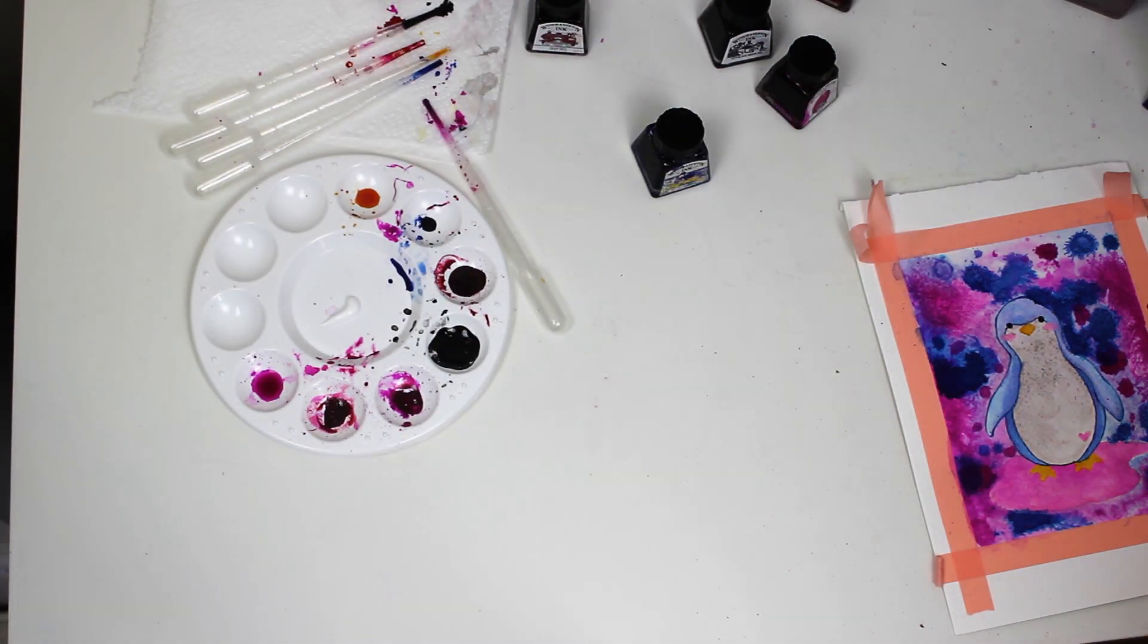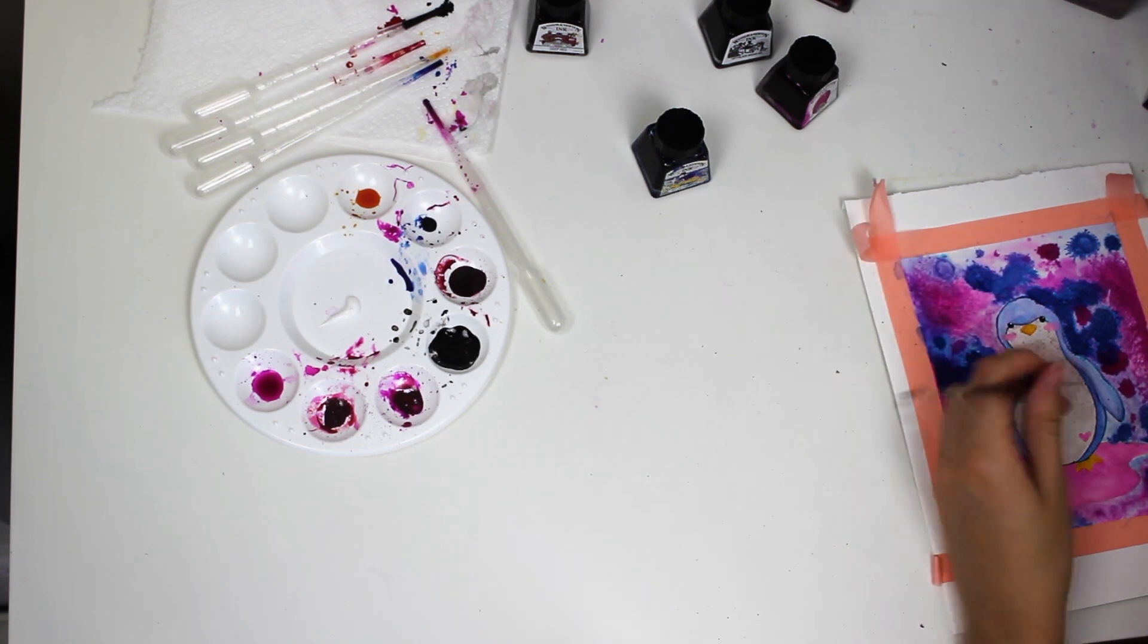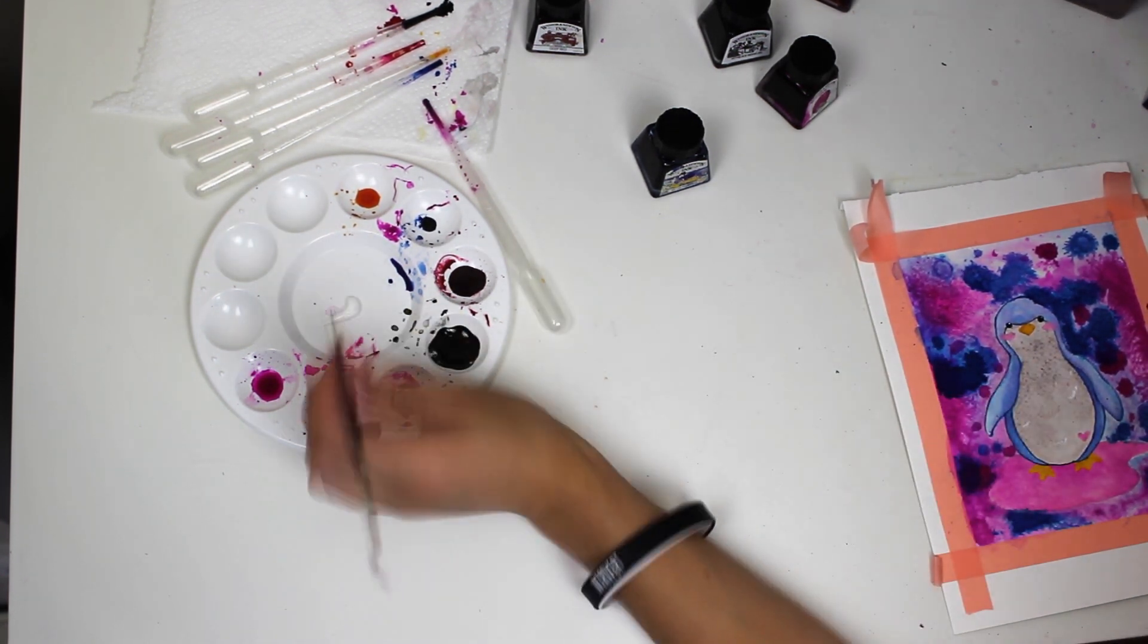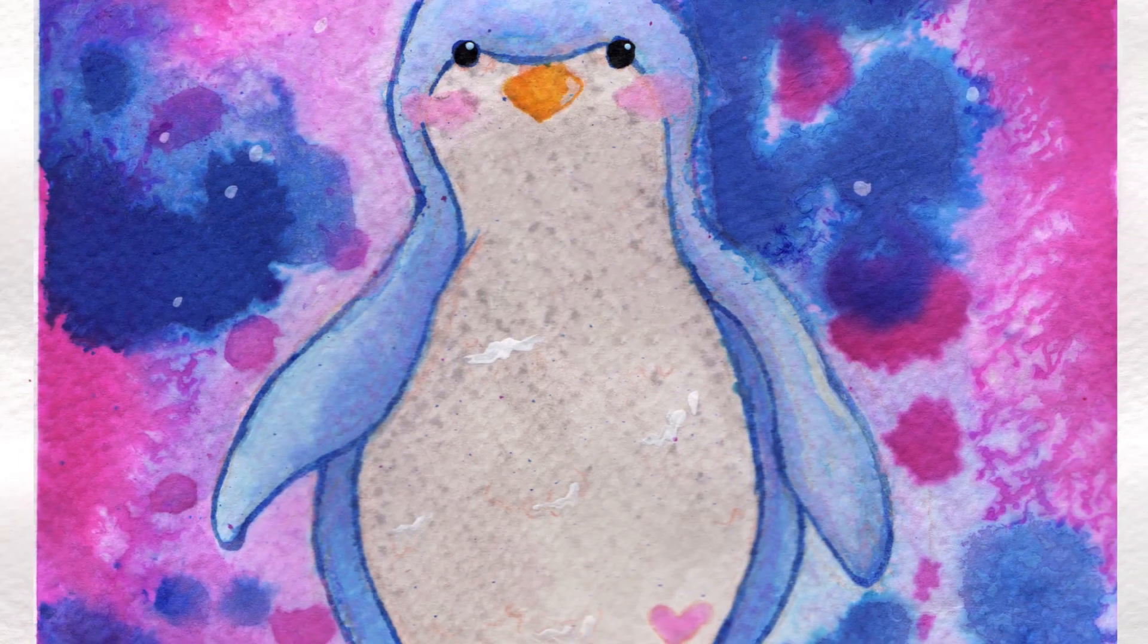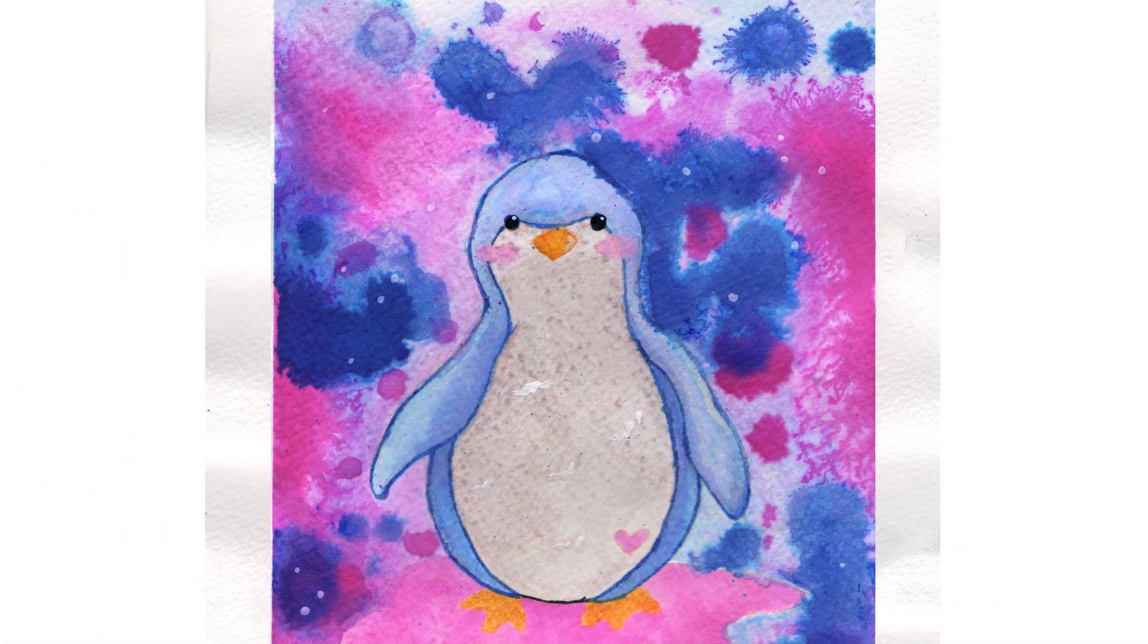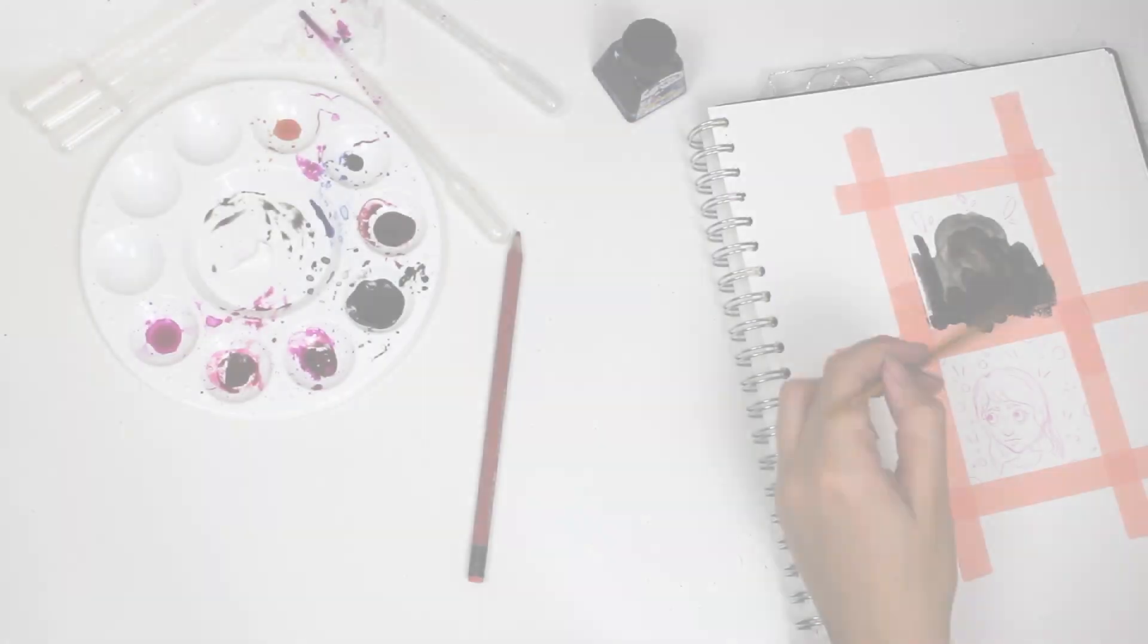I also use white acrylic paint to add in some more details as well. So as you can see with this one, my original image did go wrong so I just painted it over black because I wasn't happy with it.